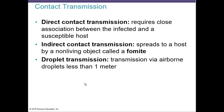You can contract a disease by direct contact, indirect contact, or droplet. Direct contact requires close association between infected and susceptible hosts — examples include touch, kissing, and sexual intercourse. Diseases transmitted through direct contact include the cold, flu, syphilis, AIDS, and infectious mononucleosis. The key point is that you need to be close to that person for the disease to spread.